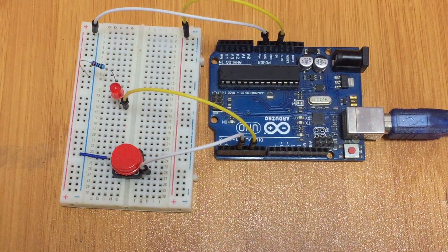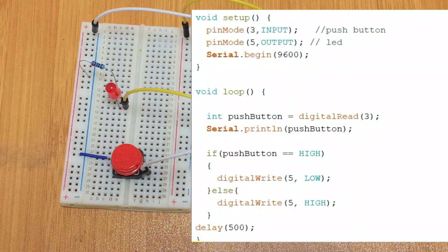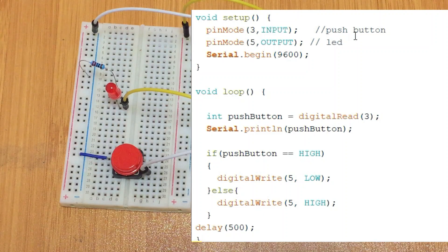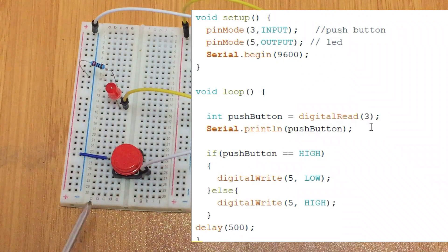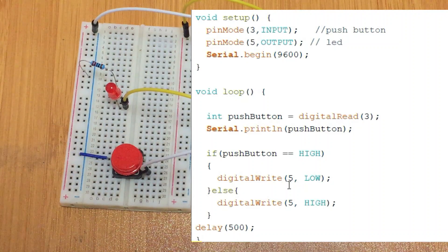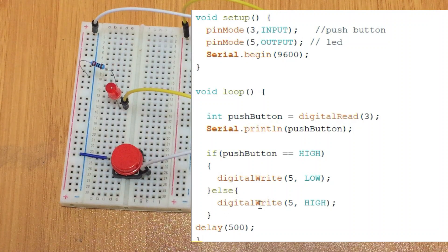Now let's have a look at the program. It's rather simple — we just have to configure pin 3 as the input for our push button, then we configure pin 5 as the output for the LED. Then in the loop we have a simple conditional that reads the status of digital pin 3. If the push button is high, the LED will be low — in other words it will be off. If the digital pin is low, the LED will light.